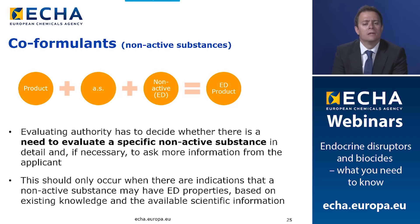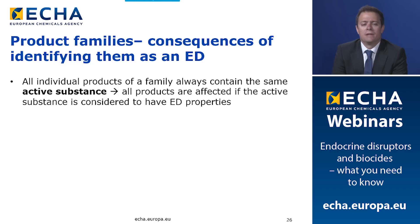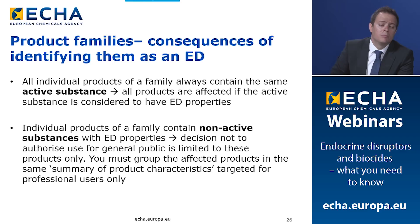Regarding product families: all individual products in a family containing the same active substance are all affected if that active substance is considered to have ED properties. However, if the ED substance is a non-active substance, only certain products in the family containing that coformulant may meet the ED criteria, and only those products will be affected. As advice, you should group the affected products in the same Summary of Product Characteristics targeting professional users only.